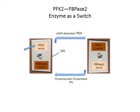When the switch is in the OH conformation, PFK2 is active. That means we'll have increased production of fructose-2,6-bisphosphate, which enhances the activity of PFK1, leading to an increase in glycolysis.